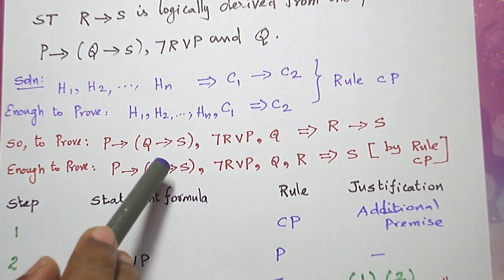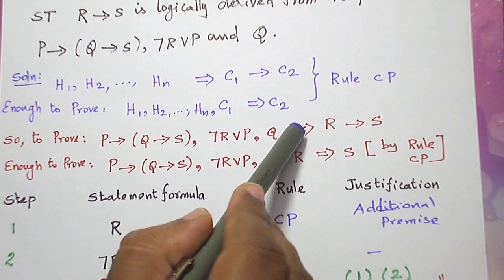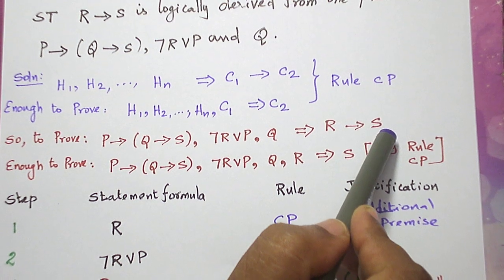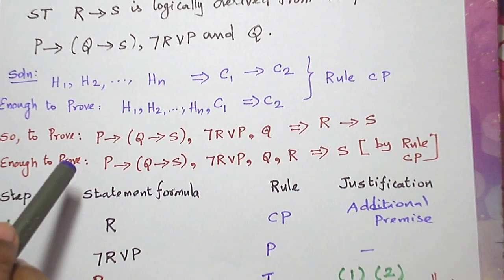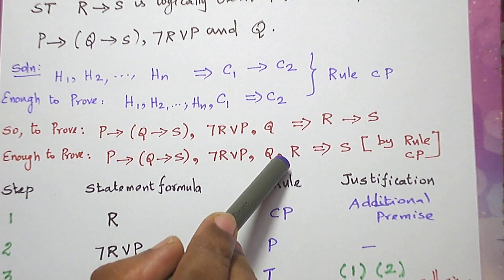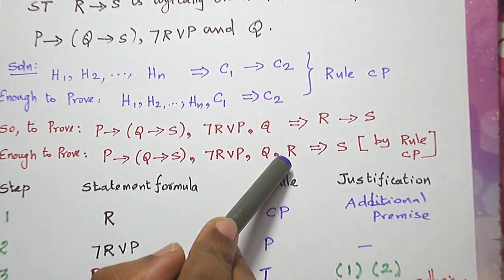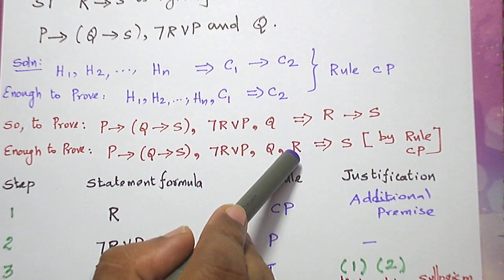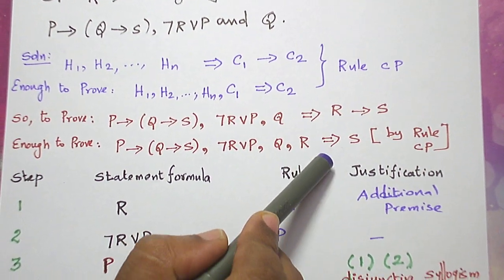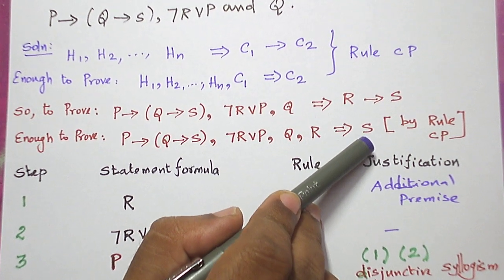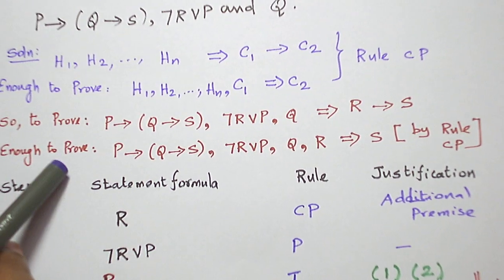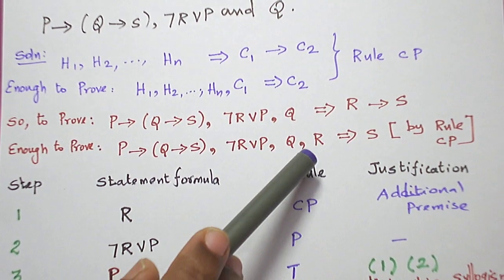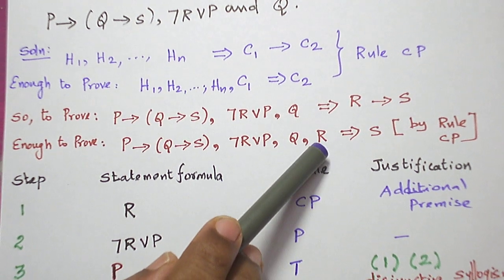When we apply this, we are given three premises and R conditional S is the conclusion we need to prove. What we need to prove is: take the three premises as given, along with the left hand side of the conditional connective. The conclusion — take R as the additional premise — and we should conclude the right hand side S. This is by rule CP, so R is the additional premise taken here.